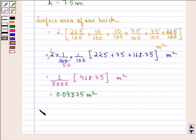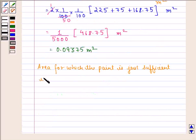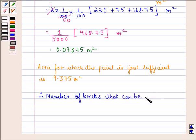Now area for which the paint is just sufficient is 9.375 meter square. Therefore number of bricks that can be painted with the available paint will be equal to 9.375 meter square